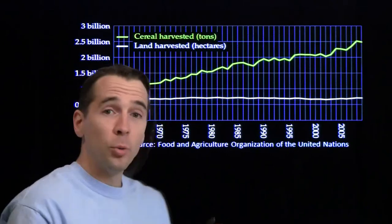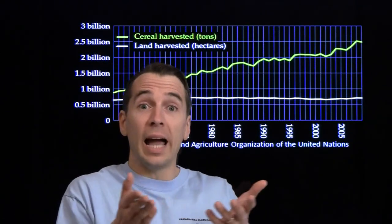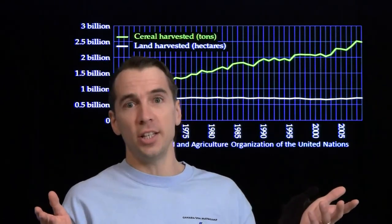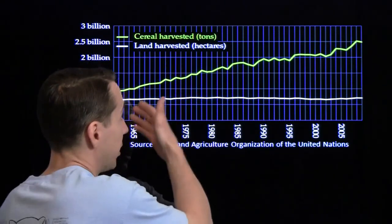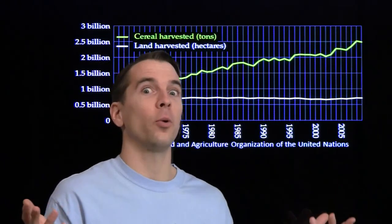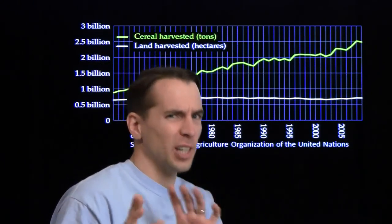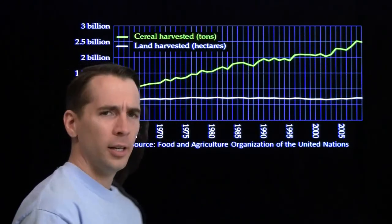This is a line graph. We typically use a line graph to display how a quantity changes over time. Here we're displaying how two different quantities change over time — it's kind of two line graphs in one.